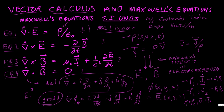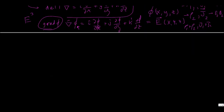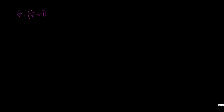Let's prove that Maxwell's equations imply conservation of electric charge, and also that magnetic monopoles do not exist. To prove charge is conserved, we need the vector identity that the divergence of the curl of B is always equal to zero. This is easy to prove: write out the Cartesian components of the curl, take the divergence, and be careful not to make sign errors.